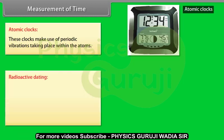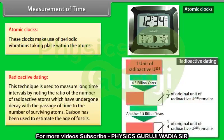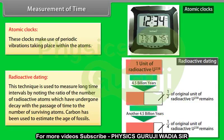Atomic clocks: These clocks make use of periodic vibrations taking place within the atoms. Radioactive dating: This technique is used to measure long time intervals by noting the ratio of the number of radioactive atoms which have undergone decay with the passage of time to the number of surviving atoms. Carbon has been used to estimate the age of fossils.